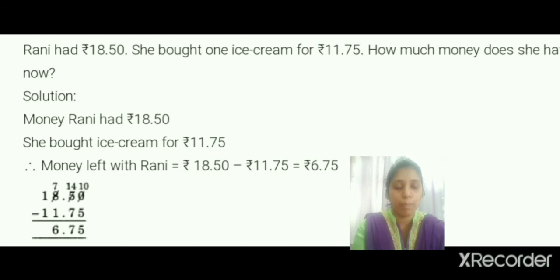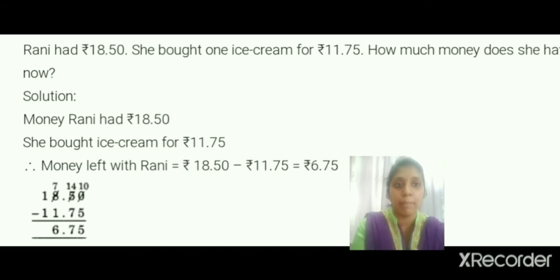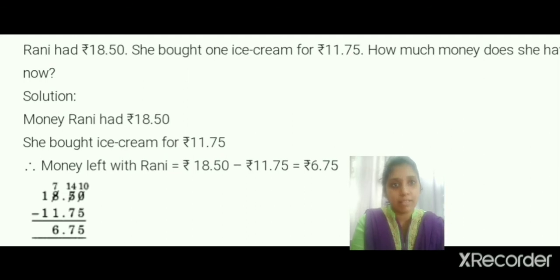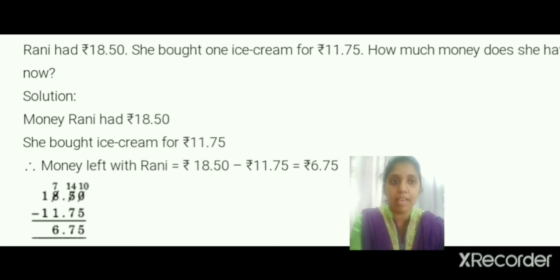Rani had rupees 18.50. She bought one ice cream for rupees 11.75. How much money does she have now? At the beginning Rani had rupees 18.50. From that money she is buying an ice cream costing rupees 11.75. After buying the ice cream, how much money is remaining? We have to subtract.